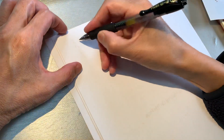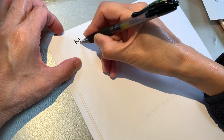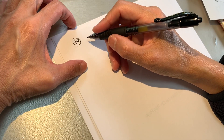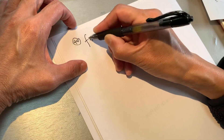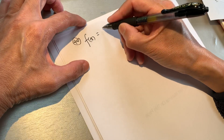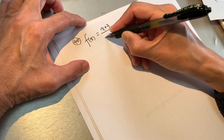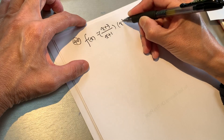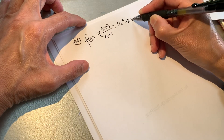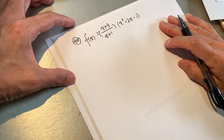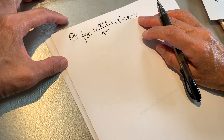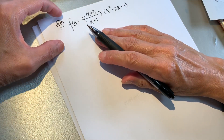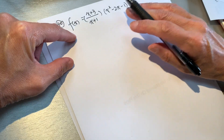Hello dear friends, let's take a look at this problem, question number 40. Why f of x equal to x plus 3 over x plus 1 times x squared minus 2x minus 1? Let me verify it. So the question is to find the derivative of this function.